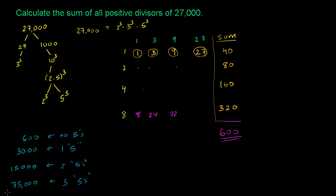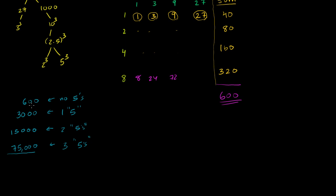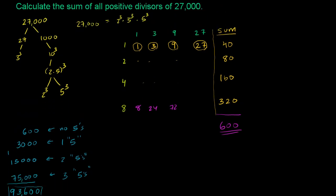Let me scroll down a little bit. So I get, I have 0, 0, then in the hundreds place I only have a 6, and then 3 plus 5 plus 5 is 13. Is that right? Yep, that's 13, and then carry the 1, and then I have a 9. So I have 93,600. So the sum of all positive divisors of 27,000 is 93,600. Hope you found that entertaining.